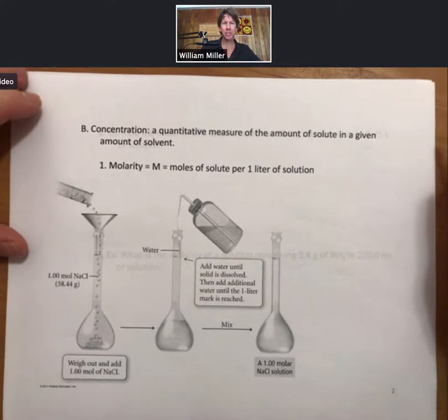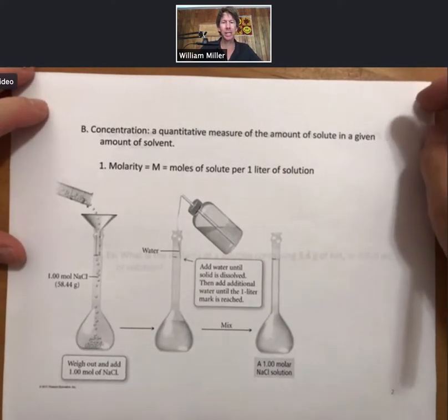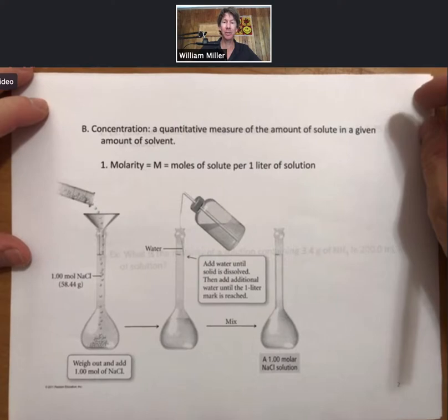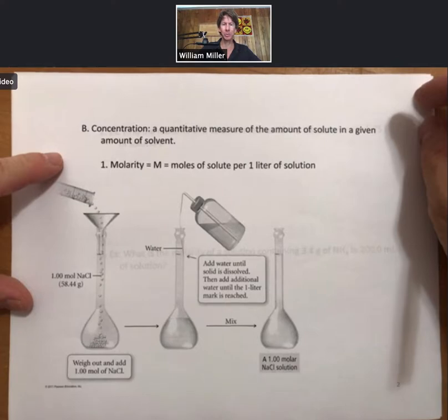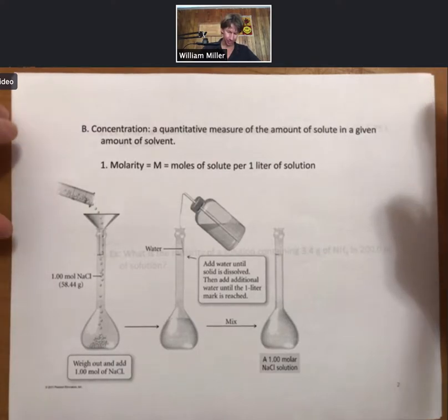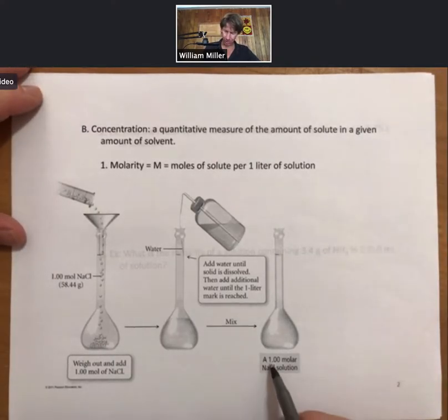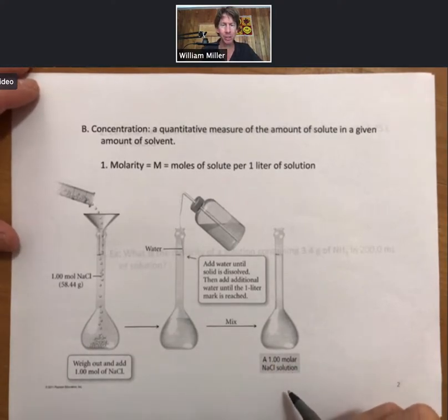The definition of concentration that we will use is a quantitative measure of the amount of solute in a given amount of solvent. The unit of concentration that we use by far the most is molarity. It is represented by capital M, and it is moles of solute per one liter of solution. If we wanted to make a one molarity solution, also called a 1.00 molar solution, we love molarity so much we give it a cute nickname.